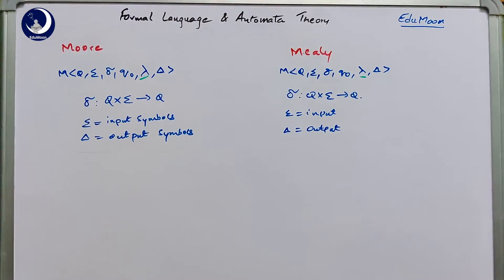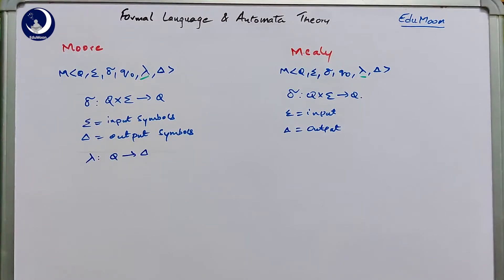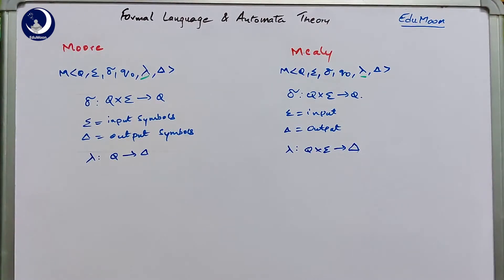The output function of the Moore machine is Q tends to delta — the output depends on the next state where we traverse after reading an input symbol. For the Mealy machine, the lambda function is Q cross sigma goes to delta — the output depends on both the next state and the given input. Whereas in the Moore machine, the output depends purely on the next state without any input interference.